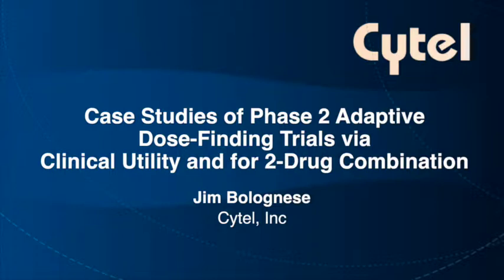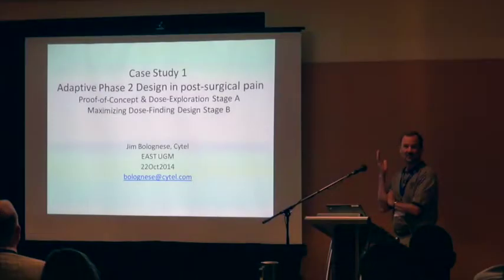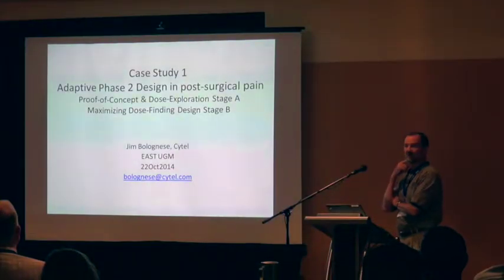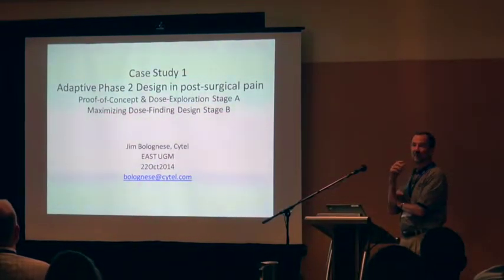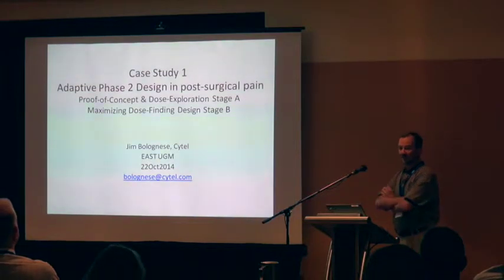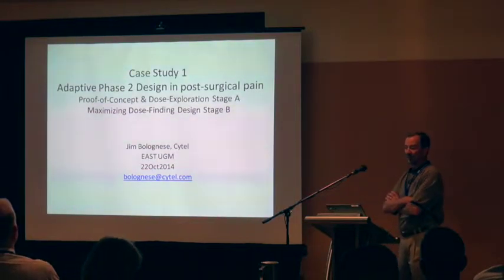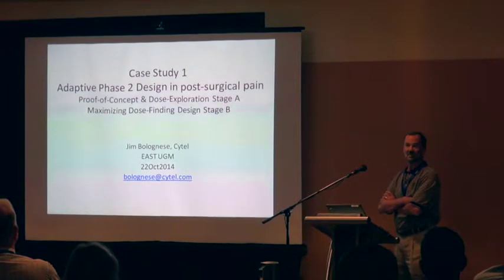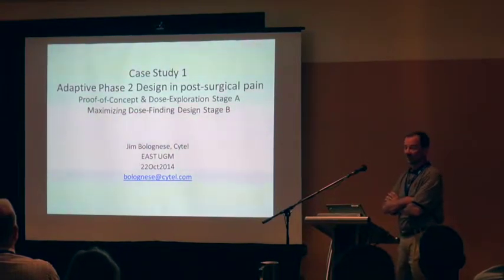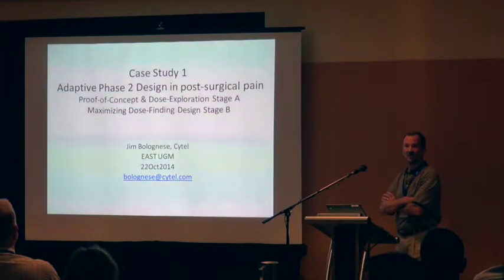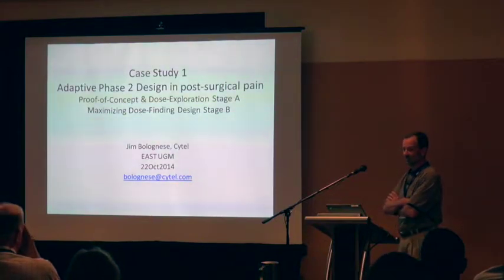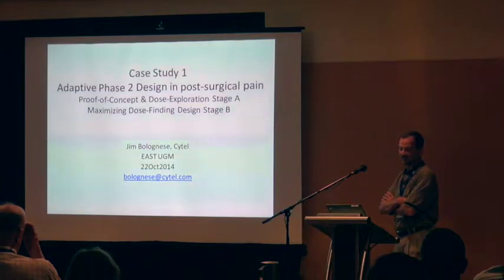I have three case studies that I've worked on recently. They're in the realm of phase two adaptive dose finding. The goal is more about picking a correct dose and assigning — increasing the number of subjects assigned to the correct dose so that the client can more effectively examine that correct dose for the primary endpoint and then for additional endpoints.